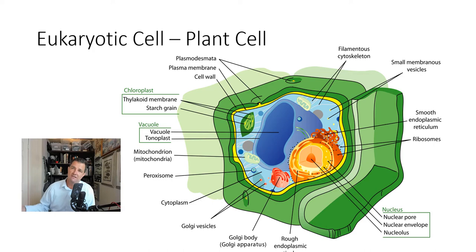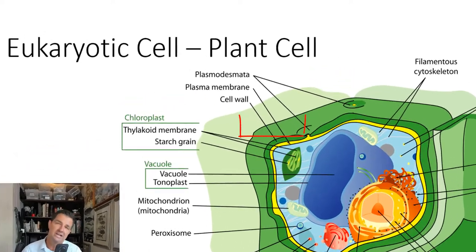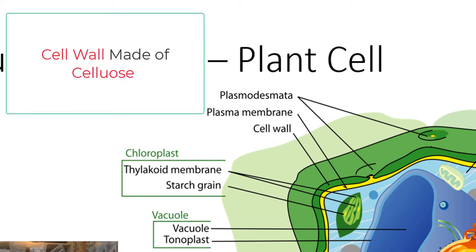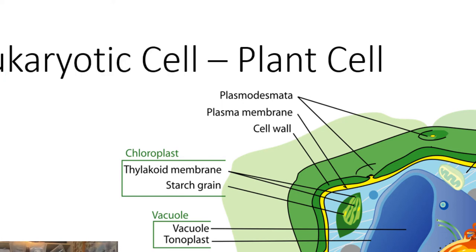Plants also have a structure called a cell wall, and it is made out of a carbohydrate called cellulose. It is outside or exterior to the plasma membrane. The cell membrane and the plasma membrane are the same thing. However, the cell wall, which sounds kind of similar, is a distinctly different structure. It helps plant cells maintain a strong structure, depending on how water moves in and out of the cell.